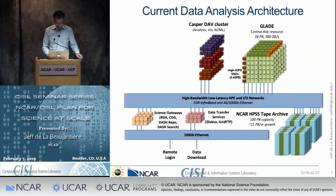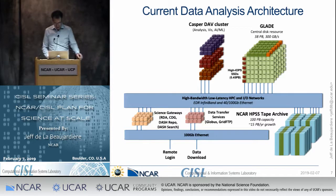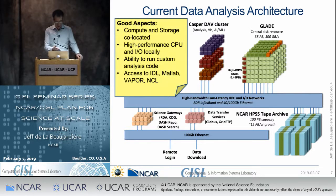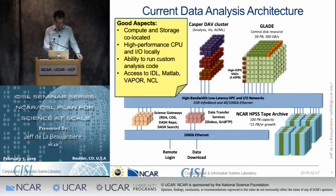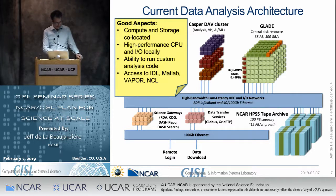If you sort of take out a couple elements and boil it down to maybe the two primary analysis things — we've got the Casper DAV cluster and Glade, and then of course some data on tape. We have compute and storage co-located, so that's exactly what you want. The network is fast, the CPU is very fast. You can run your own custom analysis code, Fortran, whatever you want. You've got access to IDL, MATLAB, Vapor, NCL, and all that on Casper. So that's really good.